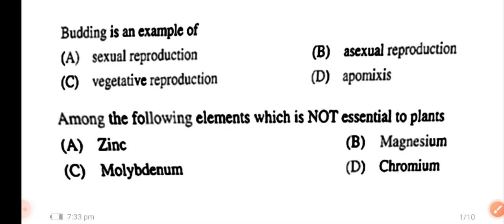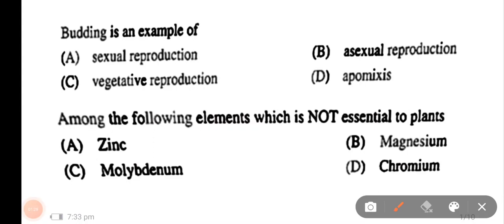First question: budding is an example of — the options are sexual reproduction, asexual reproduction, vegetative reproduction, and apomixis. The right answer is option B: asexual reproduction.